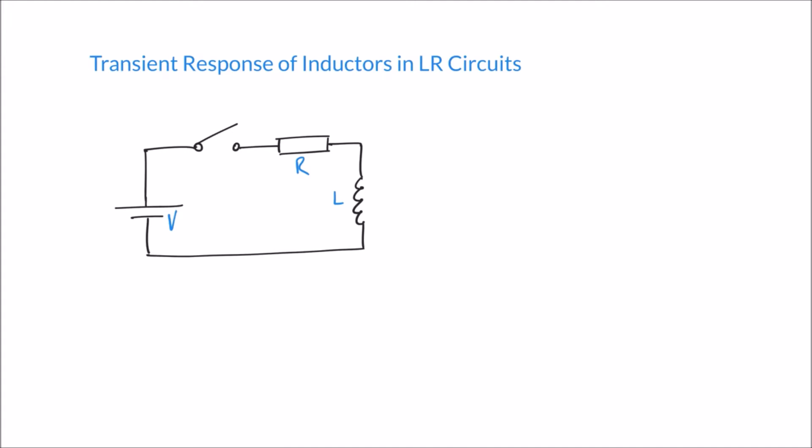On the right hand side here we have an inductor in this circuit. Inductors are measured in inductance L, and inductance is measured in a unit called henries, given the letter H. In this example we have a simple circuit with a voltage source on the left, a switch, a resistor, and an inductor. Capacitors store energy in the form of charge, and inductors are similar in that they also store energy — but they store it in the form of an electromagnetic field.